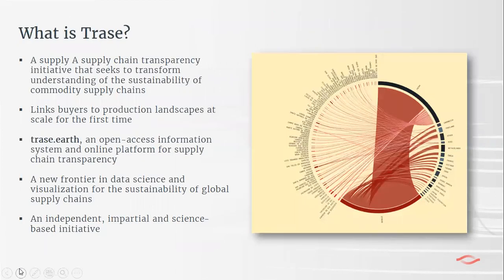TRACE is a joint initiative between Stockholm Environment Institute and Global Canopy, first launched in 2015. It's funded by governments and philanthropic foundations, in particular the Norwegian government and the Moore Foundation based in the US. Critically, TRACE is not physical segregated traceability — it's a supply chain transparency initiative that brings together existing publicly available datasets including customs data to map supply chains at scale and link buyers to production landscapes. It's data-driven, free, and an online open access platform.